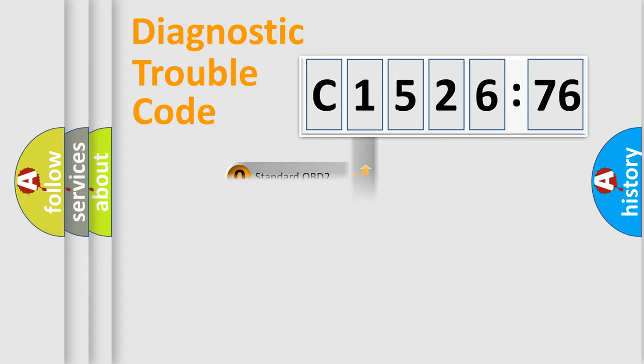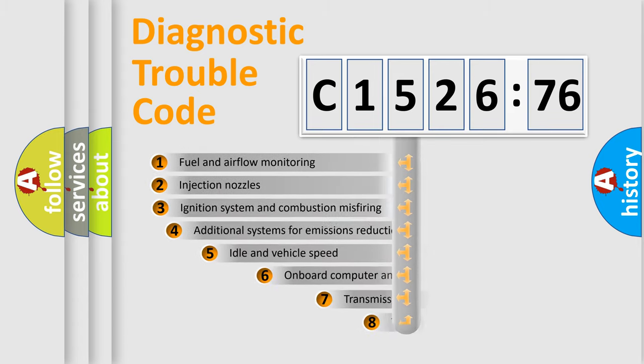If the second character is expressed as zero, it is a standardized error. In the case of numbers 1, 2, 3, it is a manufacturer-specific expression of a car-specific error.